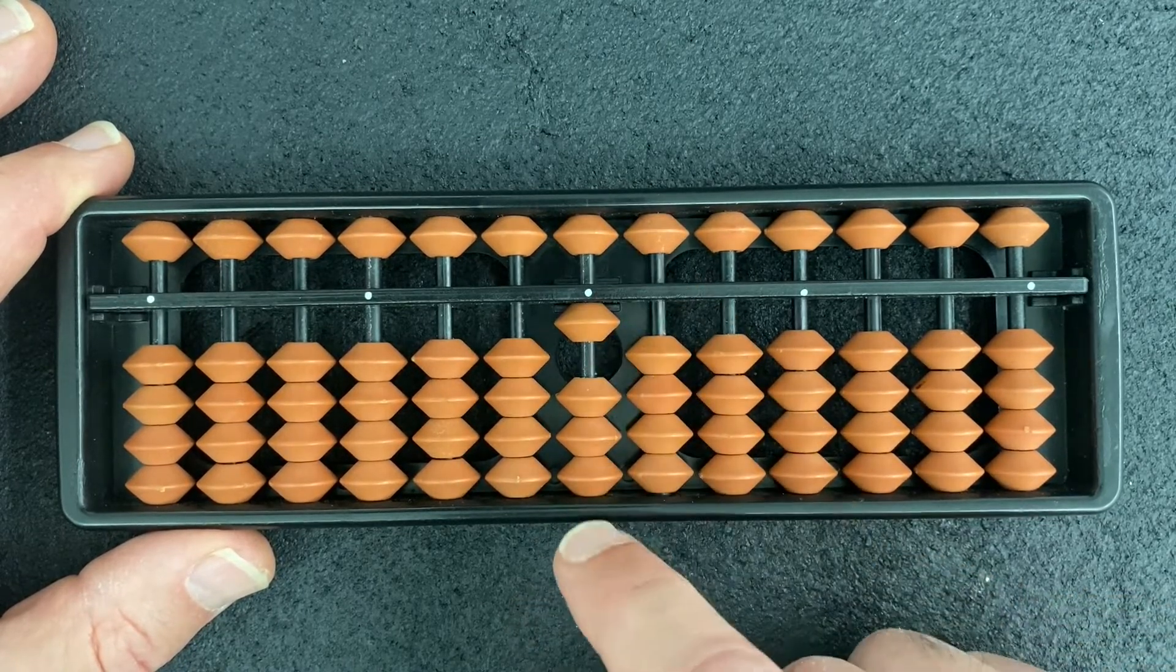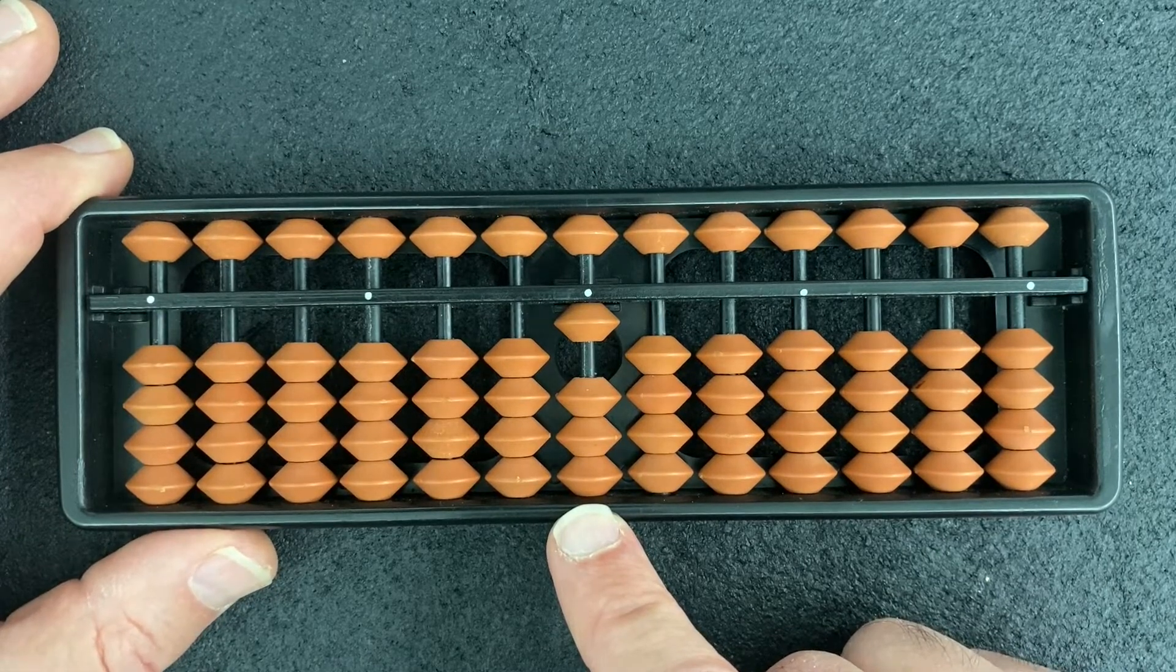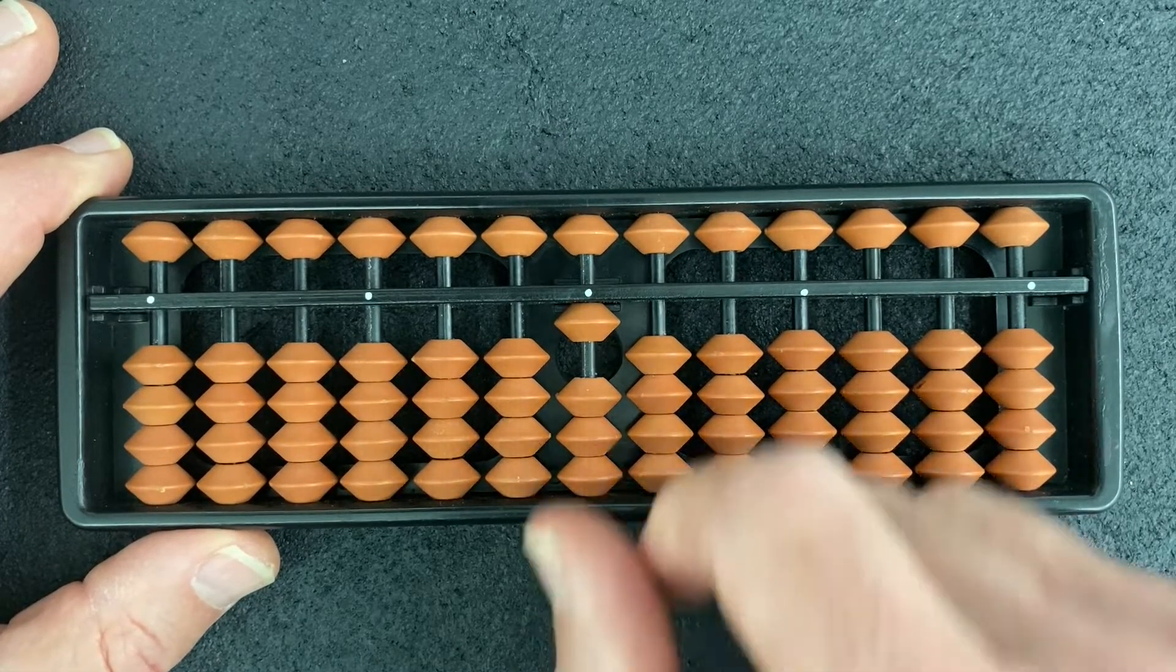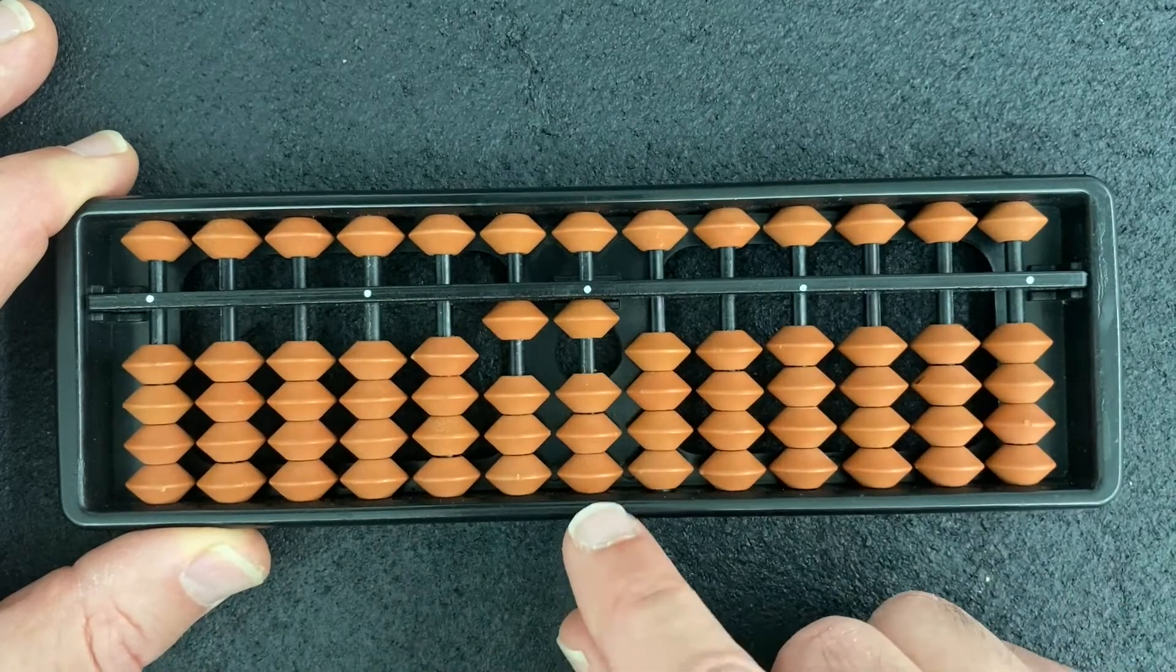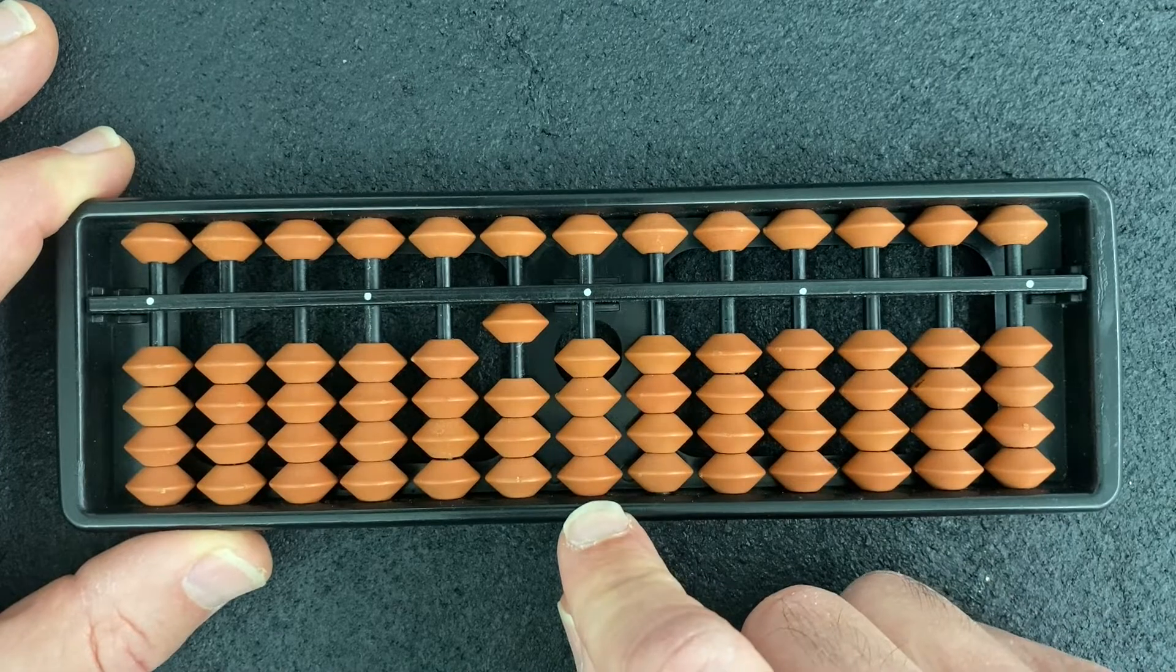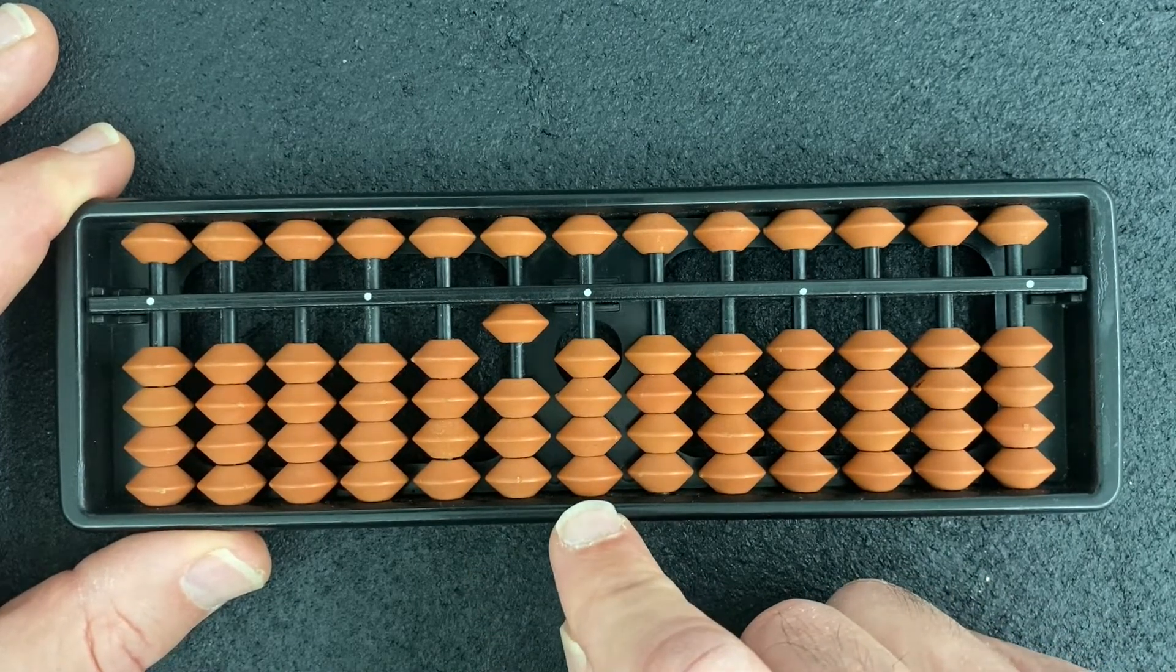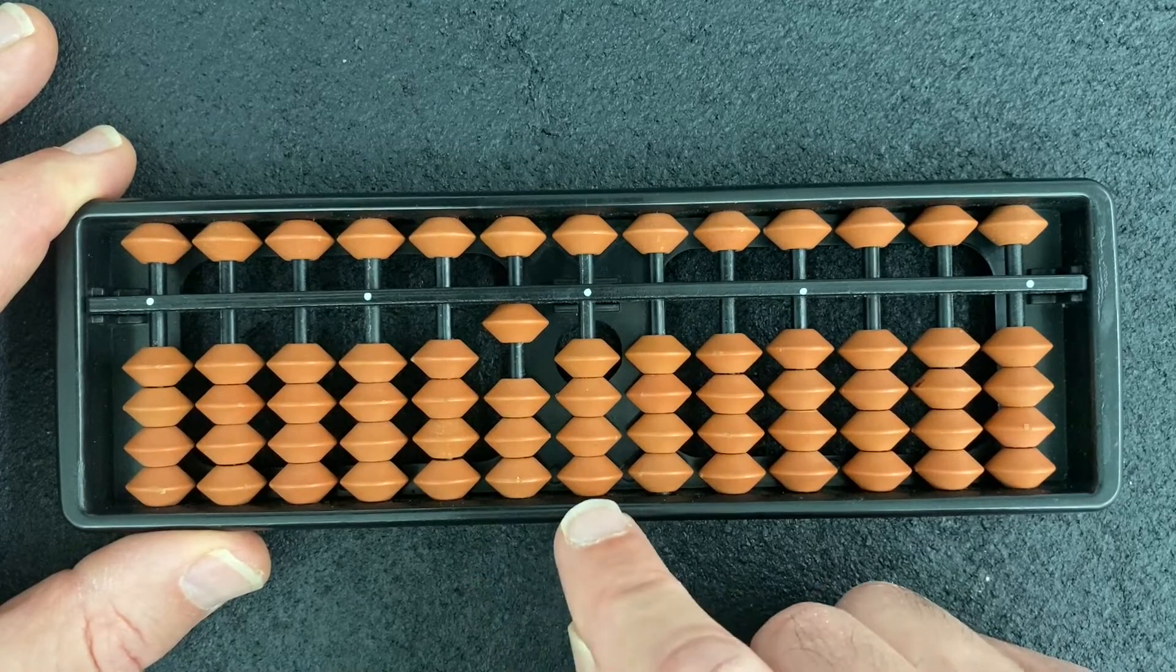So I must use my 10 pair addition rule, which says add 1 to the next rod left and then subtract 9's 10 pair, 1, from the target rod. This shows that 1 plus 9 is 1-0, or 10.